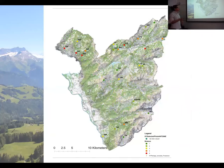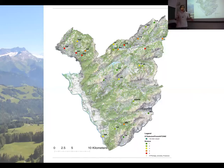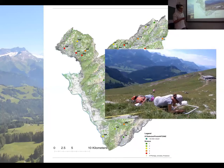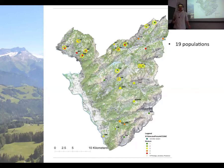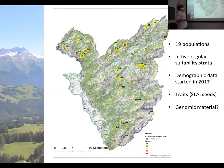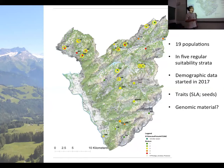When I started sampling, I had a real map with points per suitability stratum — low suitability at one end, very high at the other, randomly selected from all known occurrences. I was hoping to do two or three populations per stratum. After a lot of hard work, I ended up with 19 populations sampled by the end of the summer, well distributed across the five suitability strata. I have demographic data starting this year, and I sampled leaves for SLA measurements on the spot.